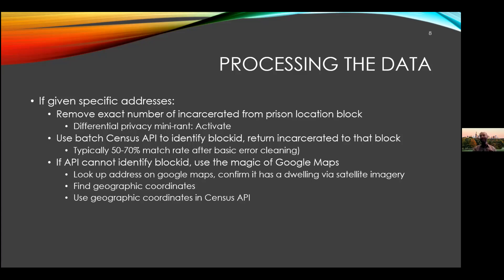Typically for every state, you get between 50 and 70% match rate. The better the State Department of Corrections data collection process, the higher that match rate. After some very basic error cleaning — like they forgot a space between numbers and the word, or there's a misspelling like West had two W's in it — make those basic error corrections and the census API will give you 50 to 70% of those back.